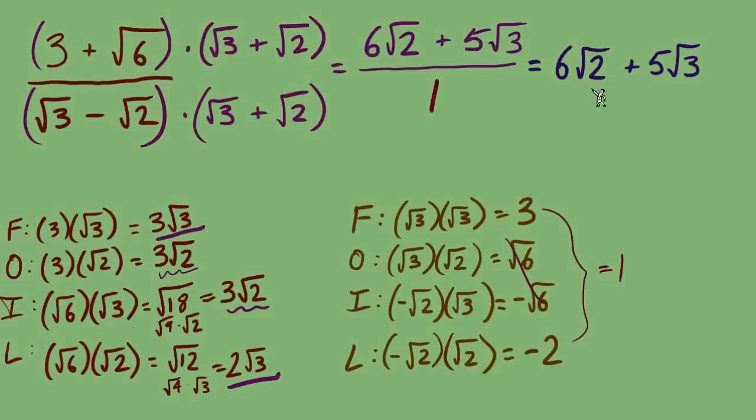The radicals, can they be simplified? That's a no. And no denominator, so no worries about rationalizing it. So we are finished. A quick check that these aren't like terms that we could combine: one has radical 2, one has radical 3. We cannot combine, so that's how our answer must stay.